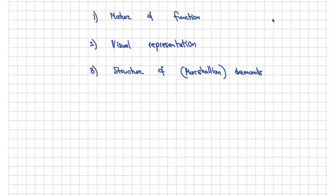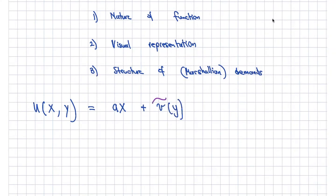So what's the nature of the function? When do we have a quasi-linear utility function in two variables? You have a utility function that depends on some linear part of x, plus some non-linear part — a v function of y. What makes this quasi-linear is that the v function must be a concave function.